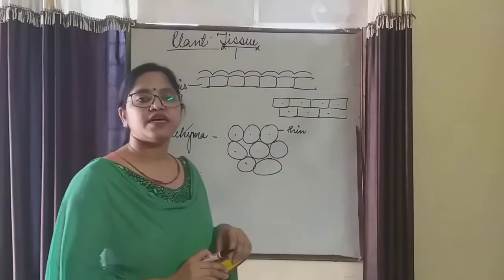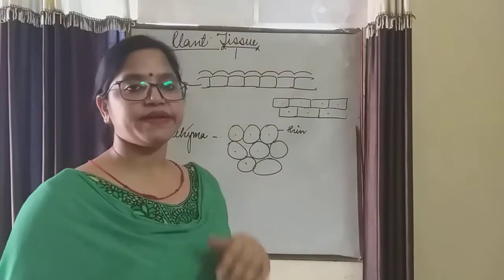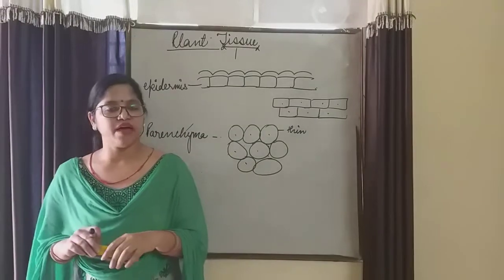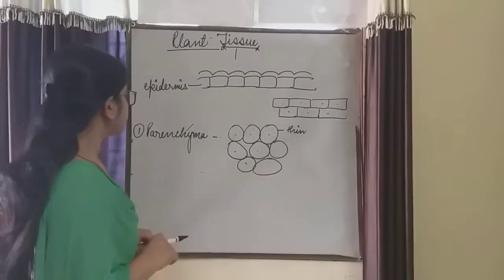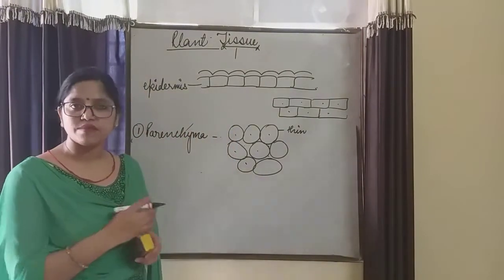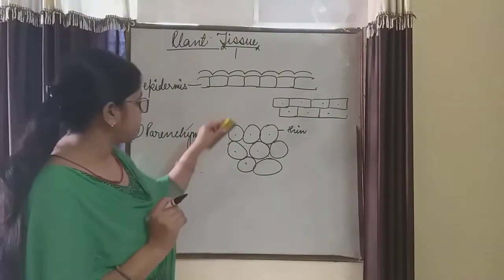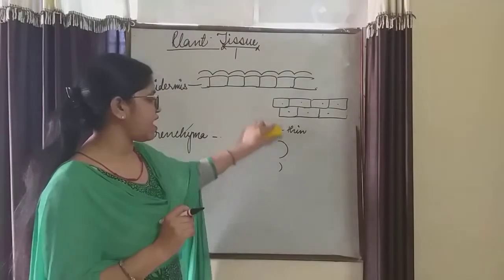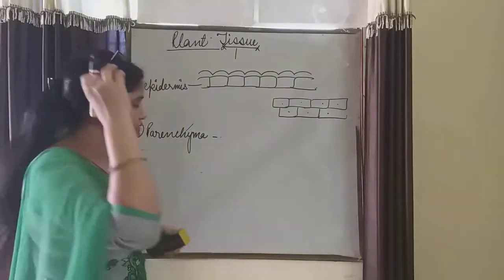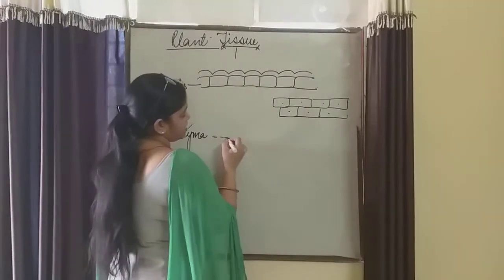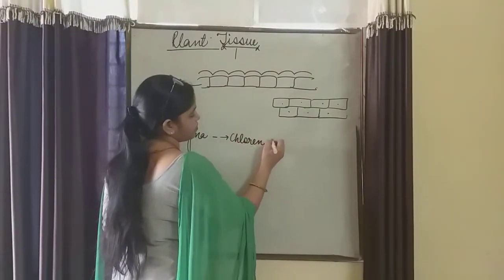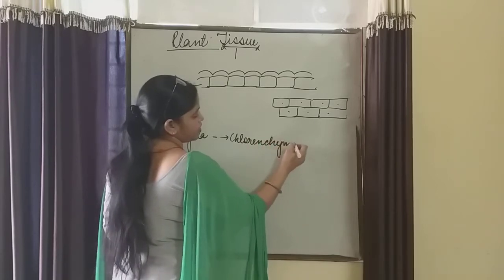They are present in the epidermis, cortex or pericycle cells of the stem and roots. If they are present in the epidermis and if the chloroplast is present in the parenchyma tissue that contain the chloroplast, that time the parenchyma is known as chlorenchyma.